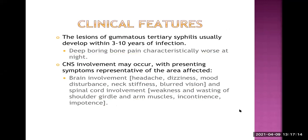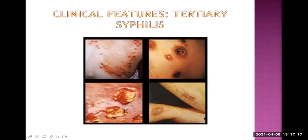These are images of gummas — granulomatous lesions of tertiary syphilis. If we take a biopsy from here and send the tissue to the histopathology lab, they will report it as a granuloma.